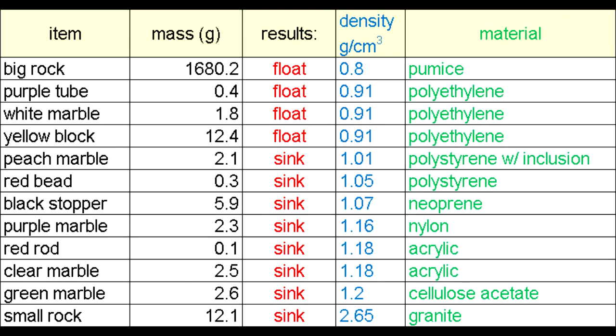So the purple tube, the white marble, and the yellow block all have a density of 0.91 grams per cubic centimeter, and that's because they're made of the same material, polyethylene.